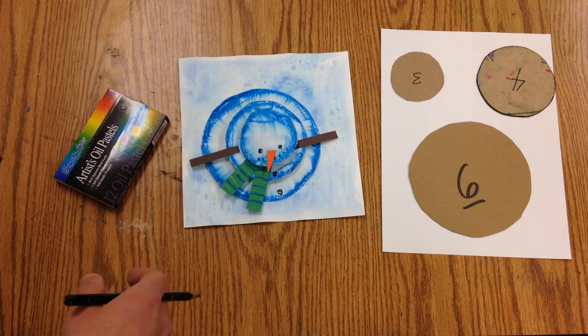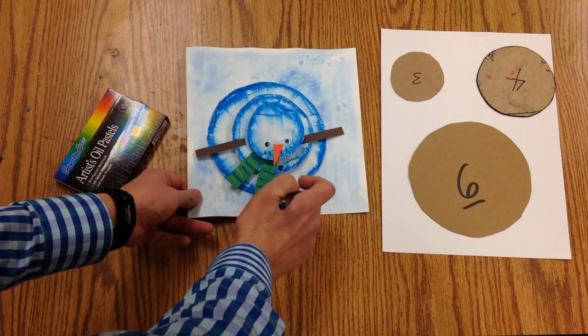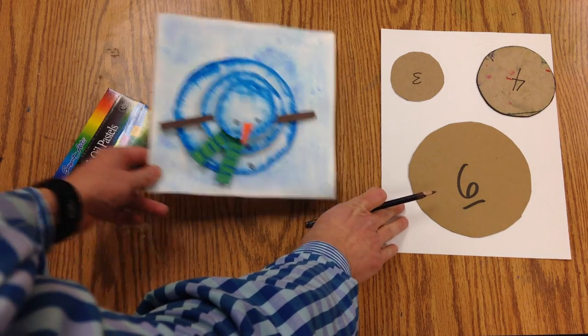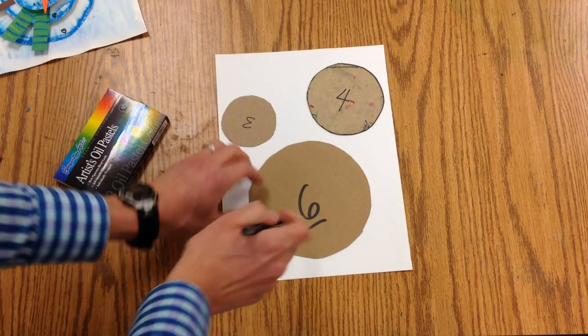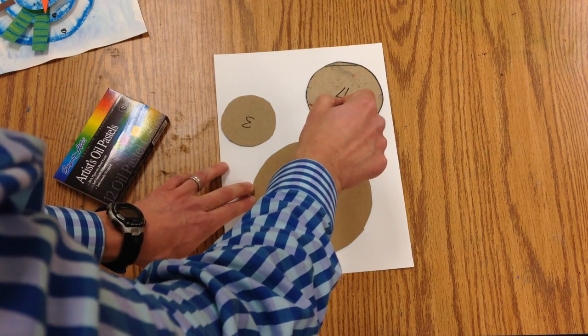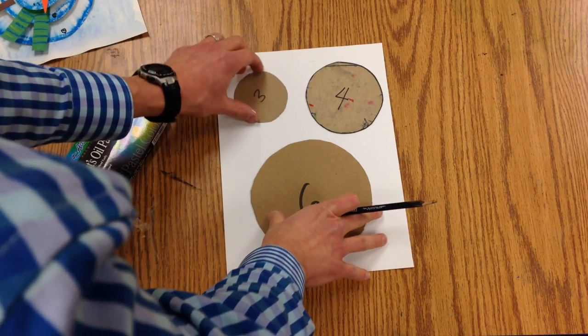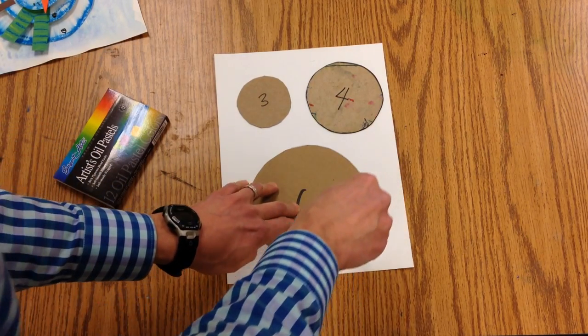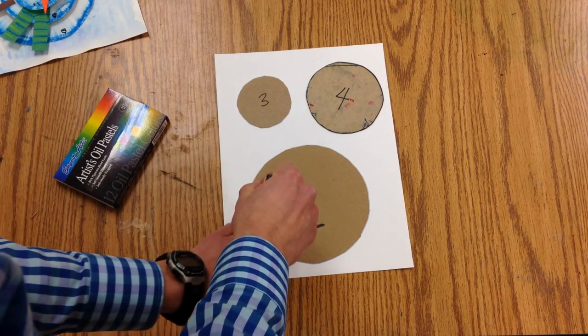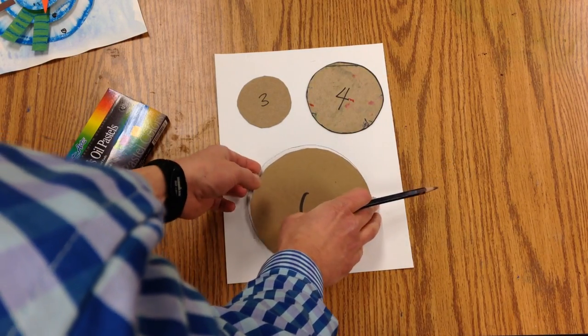So the first thing we need to do is create the three snowballs. I've got these templates and they're different sizes: this one is a six inch diameter, four inch diameter, and a three inch diameter, and you want to just put it on the table and trace around.